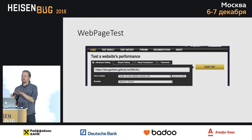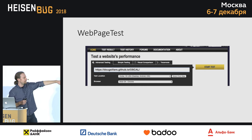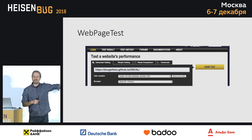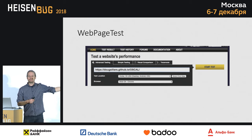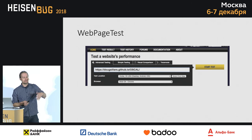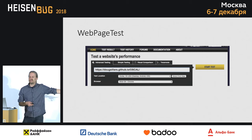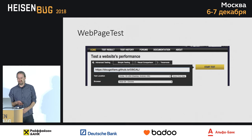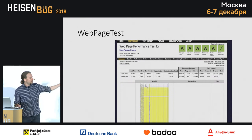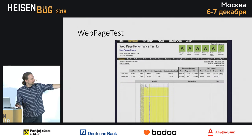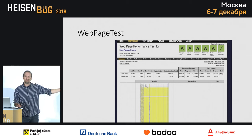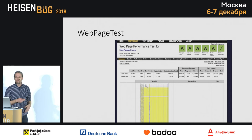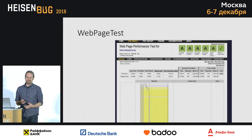For mobile web, WebPageTest is an awesome tool. You just type in the URL and a test location, so you can test your website anywhere in the world — Singapore, the United States, London, whatever. In Virginia, they actually have real Android and iOS devices so you can test the website on real hardware. You get all sorts of timings with numbers, and a waterfall chart that shows everything downloaded on the web page, so you can audit it and figure out what's causing delays.